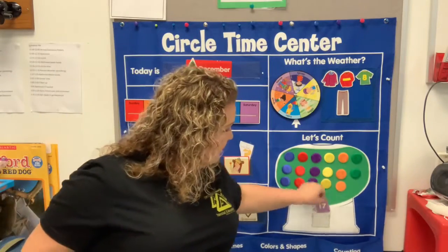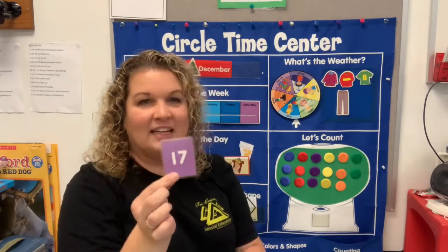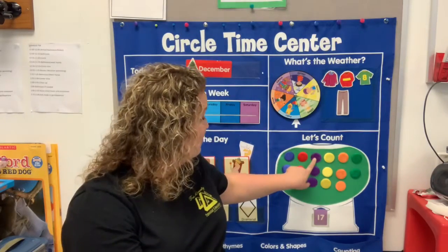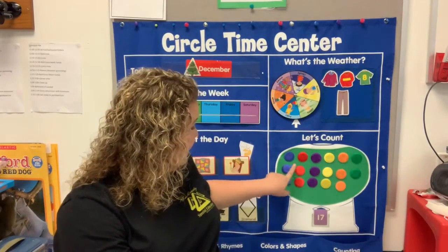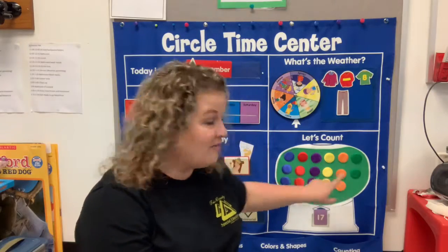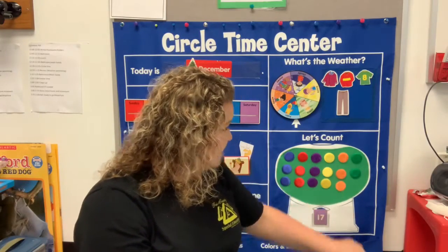Let's talk about our number. What number is this? 17! When you see a one in front and a seven behind it, that's called 17. Let's count to 17 together with our gumballs — 1, 2, 3, 4, 5, 6, 7, 8, 9, 10, 11, 12, 13, 14, 15, 16, 17! See if you can get out your bottle caps and count 17 with your mom or dad or grandma or grandpa.